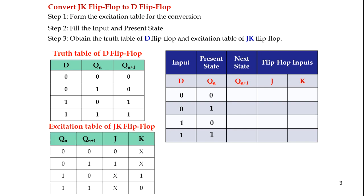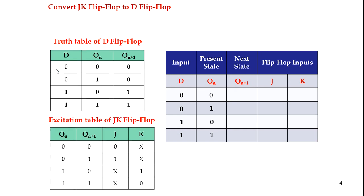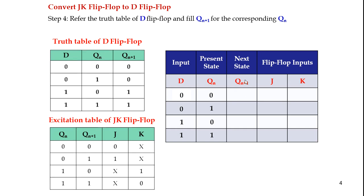This is the truth table of the D flip-flop and this is the excitation table of the JK flip-flop. Using this truth table, we fill the next state. For D input and present state both 0, the next state is 0. For input 0 and present state 1, the next state is also 0. For input 1 and present state 0, the next state is 1, and for input 1 and present state 1, it is also 1.